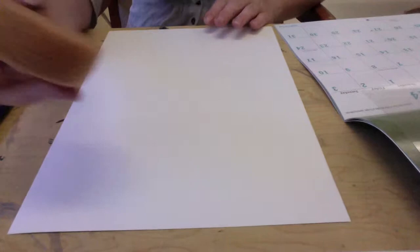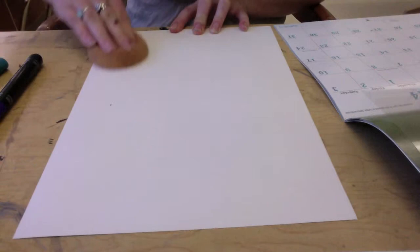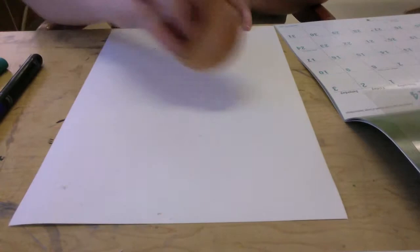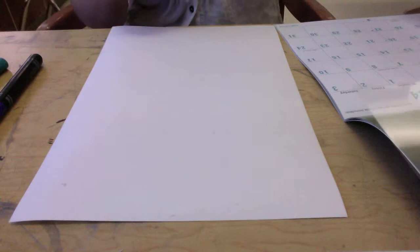The next step is to take a really just slightly wet sponge and take the sponge and take it across your paper a couple times. You just want to make sure that it's just slightly damp. You don't want any puddles. You don't want it to be dripping, sopping wet. Just very, very slightly damp.